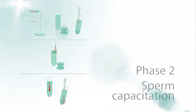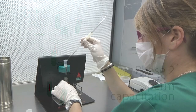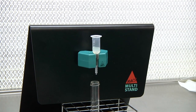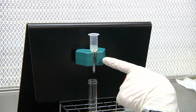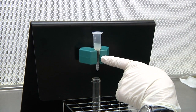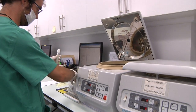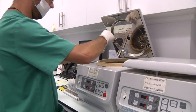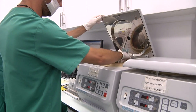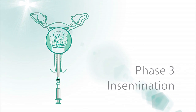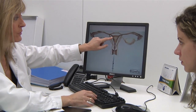The second phase is sperm capacitation, where the sperm sample is processed to improve its quality and render spermatozoa competent to fertilize. This involves separating spermatozoa from the seminal plasma and selecting those with the highest motility.